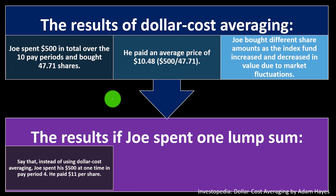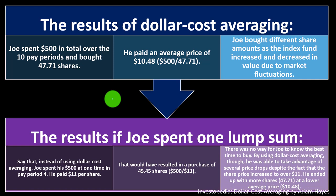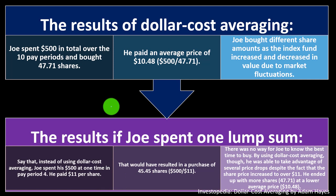In comparison, say that instead of using dollar cost averaging, Joe spent $500 as a lump sum in pay period four. At that time he paid $11 per share, which would have resulted in a purchase of 45.45 shares ($500 divided by $11). There was no way for Joe to know the best time to buy. By using dollar cost averaging, he was able to take advantage of several price drops despite the fact that the share price increased over $11. By just investing every paycheck, he buys some at the peaks and some at the troughs.